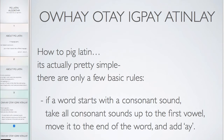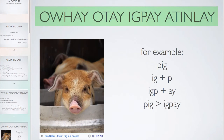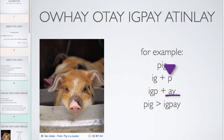How to Pig Latin — at the top we have 'Ow-hay', 'Ote-tay', 'Ig-pay', 'Atin-lay', which is how to Pig Latin in Pig Latin. It's pretty simple — there are just a few basic rules. The first rule is that if a word starts with a consonant sound, we take all the consonant sounds up to the first vowel, move them to the end of the word, and add 'ay'. So, for example, Pig: you take the P, move it to the end, add 'ay', and thus Pig becomes Ig-pay.